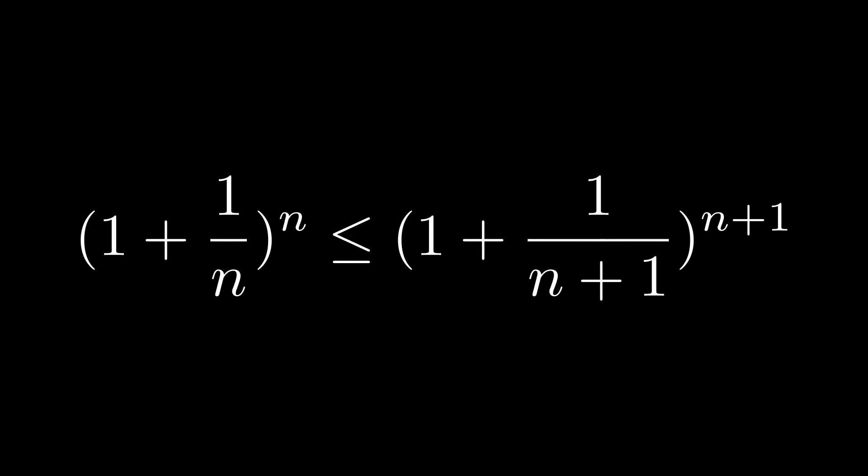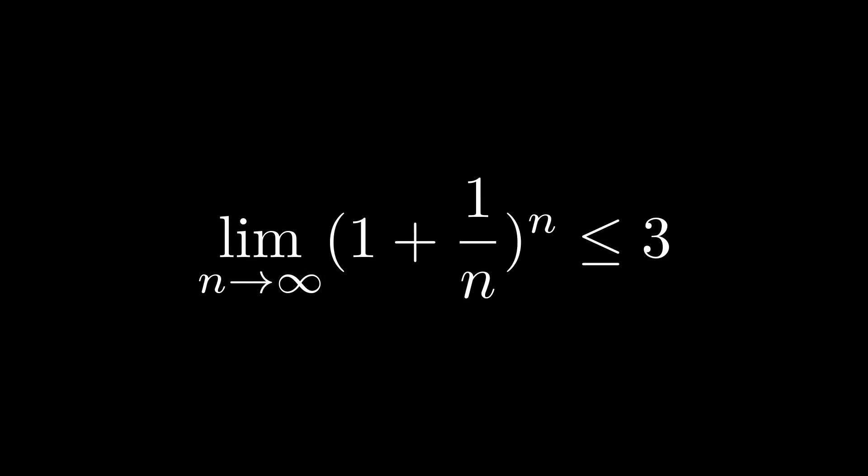This injection proves our inequality, and when we unwind all that algebra, it also shows that our sequence is monotonically increasing. We've shown that these terms are bounded above by 3, and increase monotonically, which means that the limit converges to some value e less than or equal to 3.